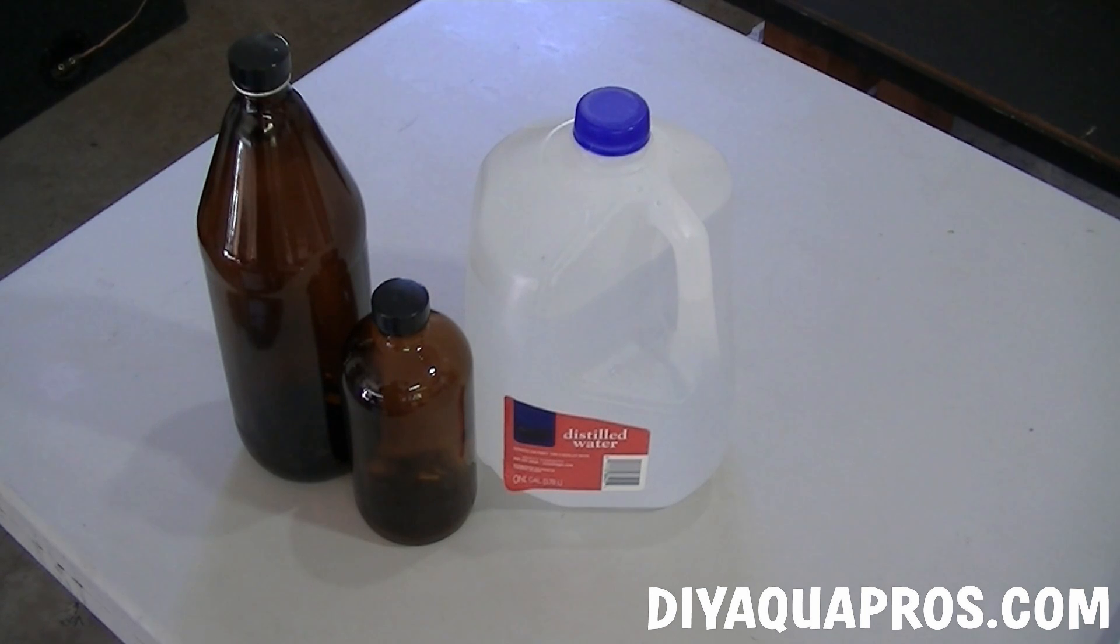For this project you'll need a gallon of distilled water and some type of bottle to serve as the container for your fertilizer solution. You can use any size and style of bottle you want. It'll only change one calculation we'll make later in the video. Just make sure that it has a cap. We're choosing to use the one liter brown glass bottle you see on the left.